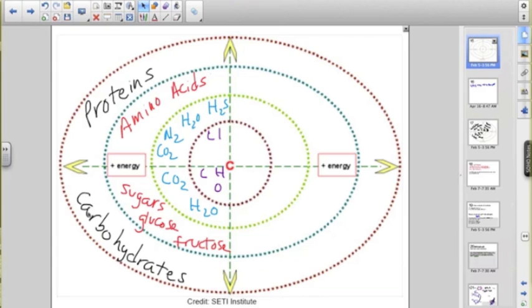The elements that make up proteins are carbon, hydrogen, oxygen, nitrogen, and of course, sulfur. CHONs. Proteins are made of CHONs.